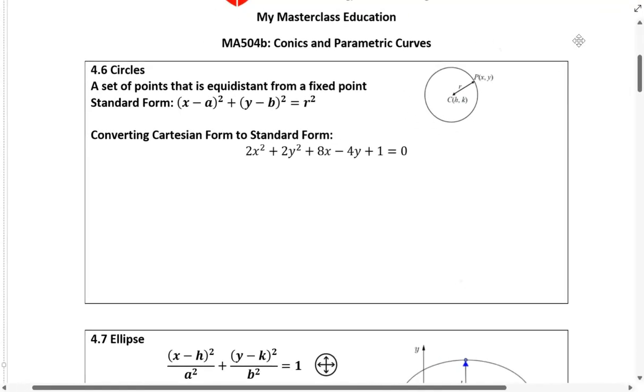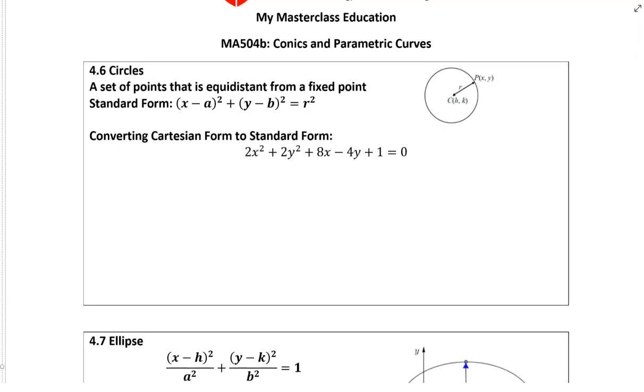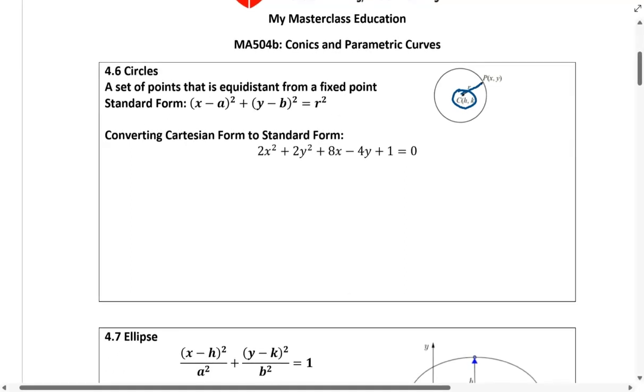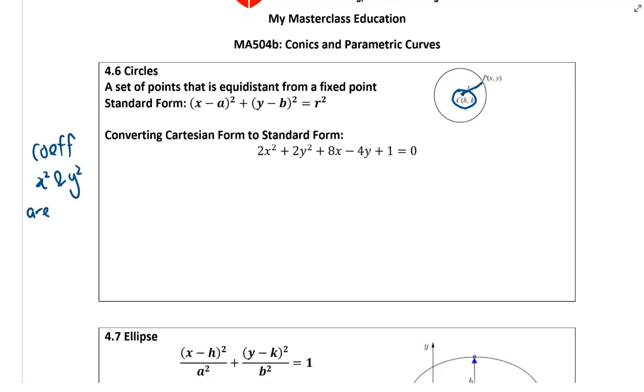A circle is a set of points that is equal distance from a center. From a center and a radius I can draw a circle. This is a standard form. Most of the time you need to convert from Cartesian form to standard form. First you need to identify that the coefficient of the x square and the y square are equal.